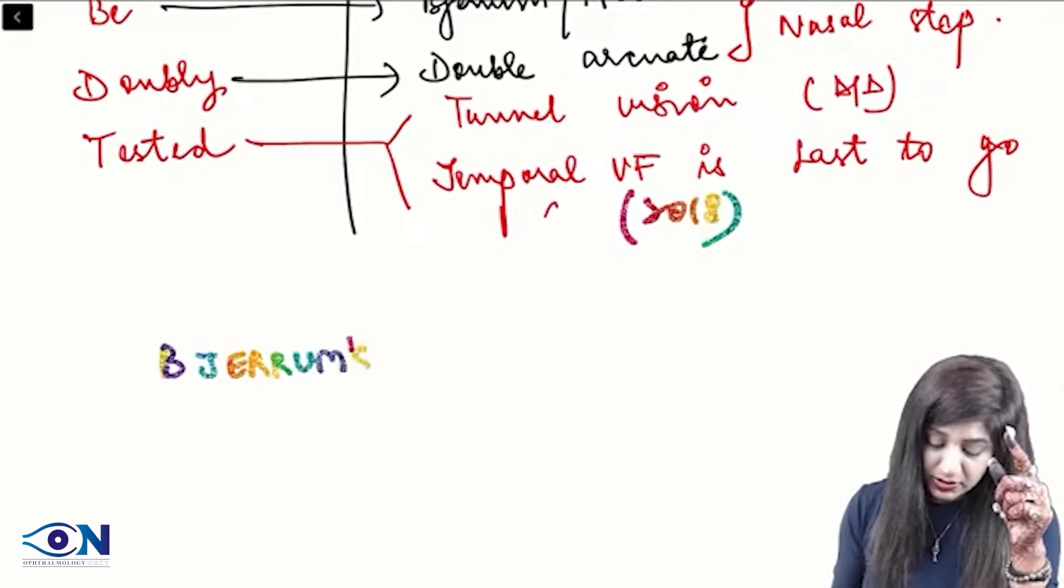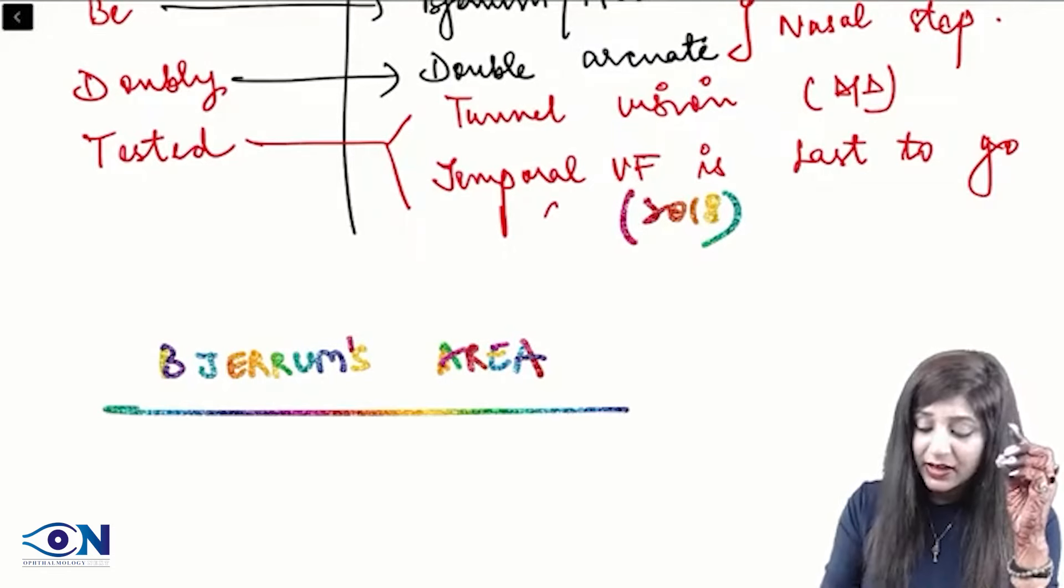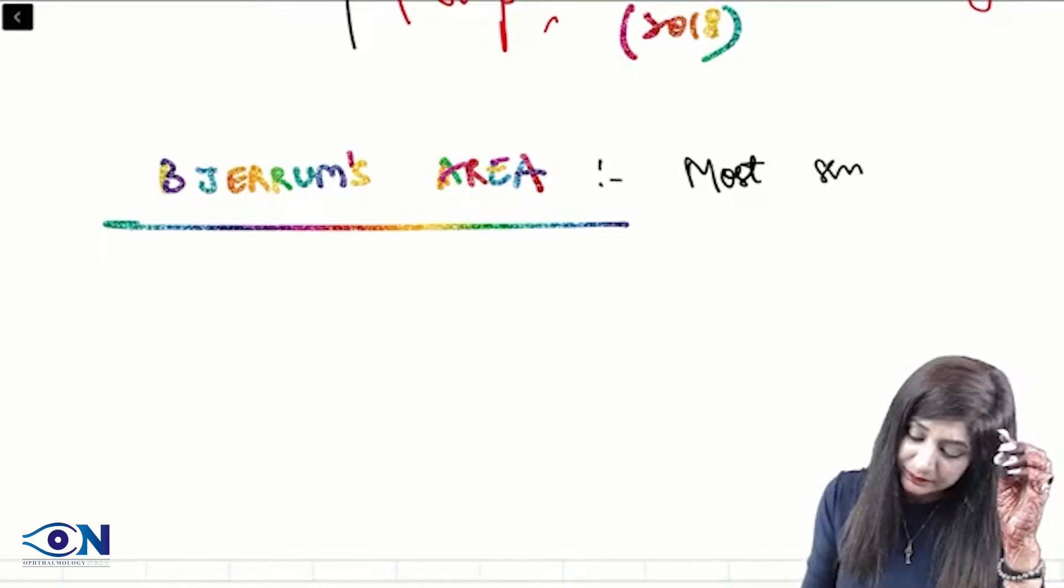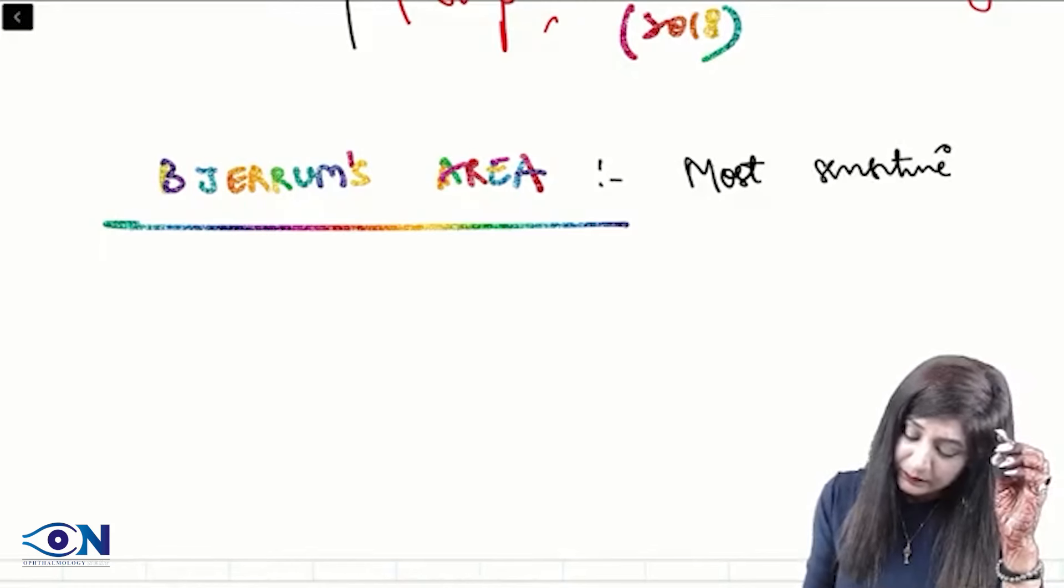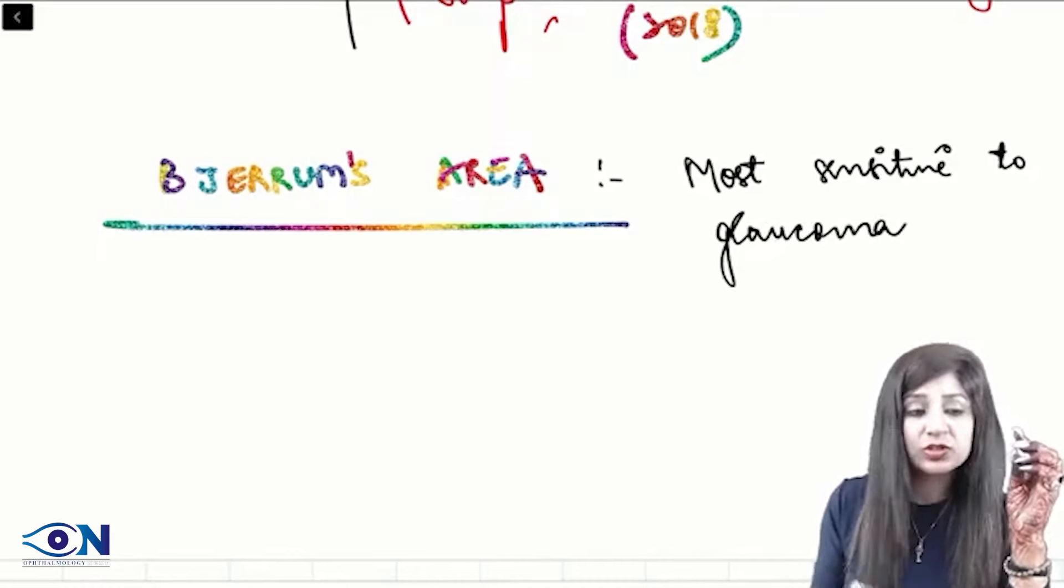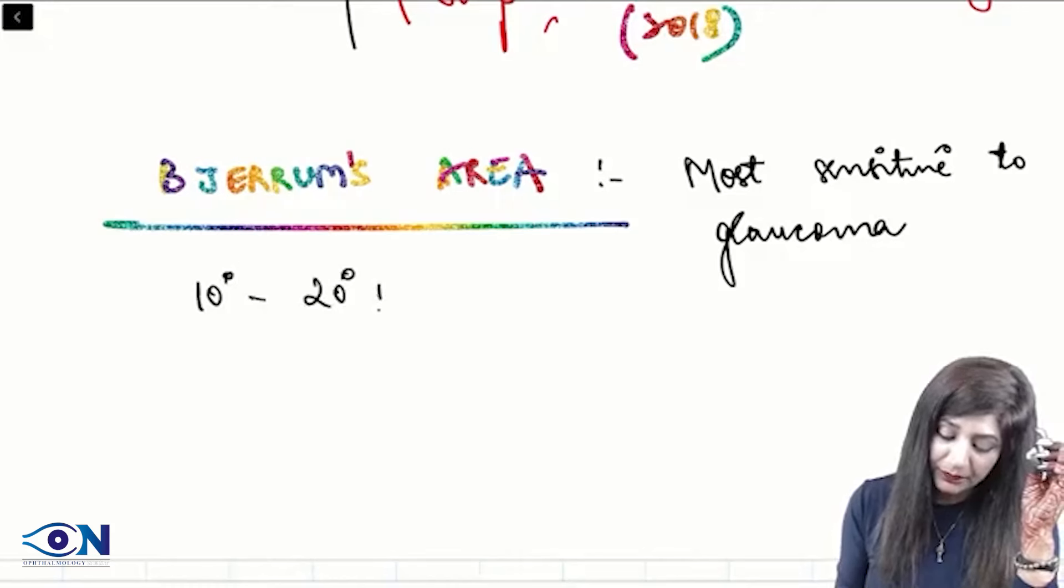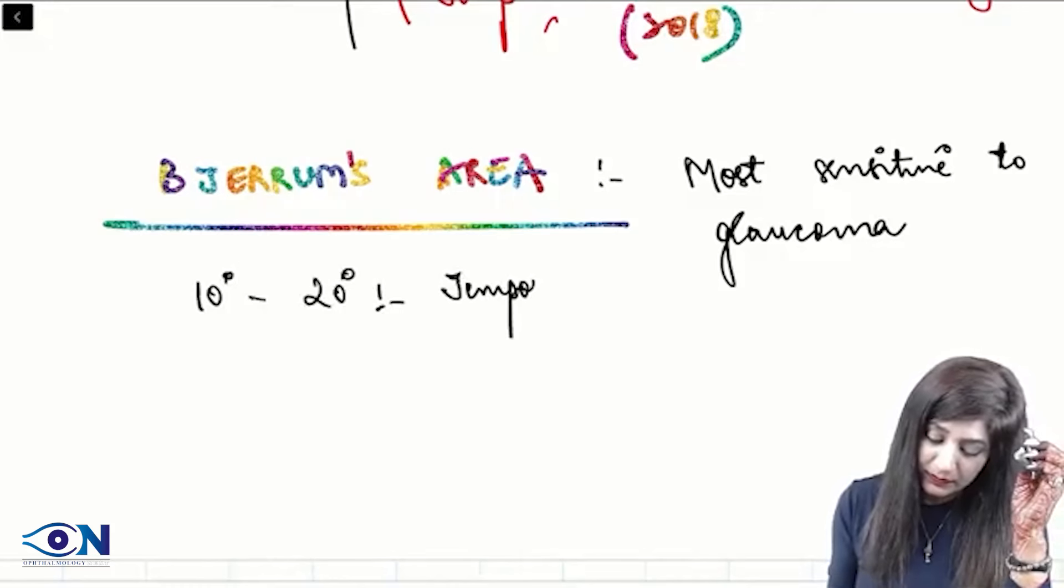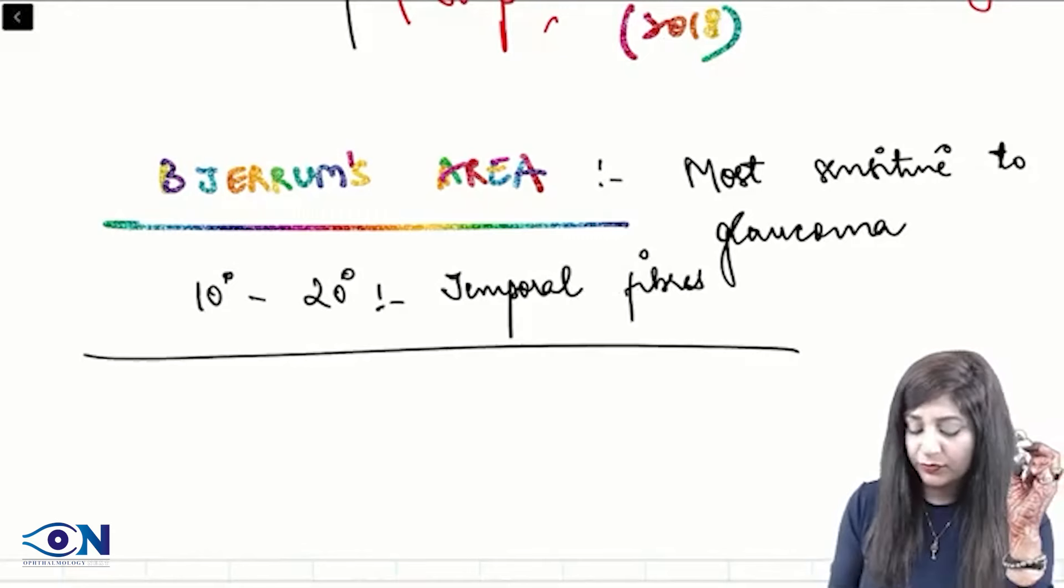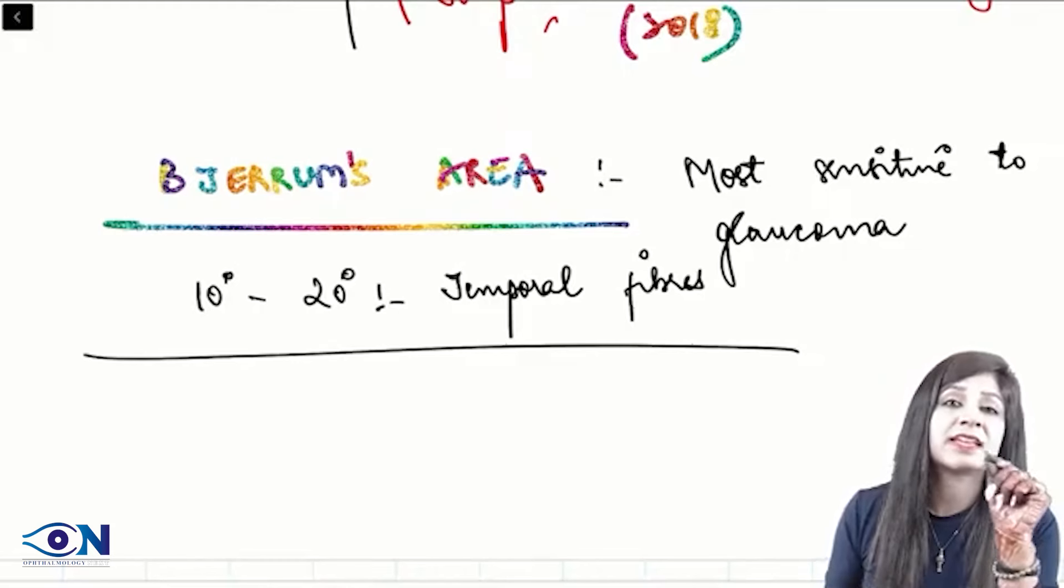What is the Bjerrum's area? Bjerrum's area is the area which is most sensitive to the glaucoma, most sensitive to the changes of glaucoma, which is 10 to 20 degree temporal fibers. 10 degree to 20 degree temporal fibers. They are more sensitive to glaucoma. This is called as the Bjerrum's area.